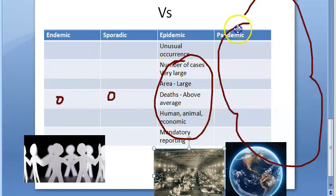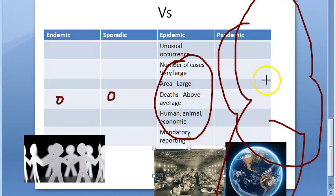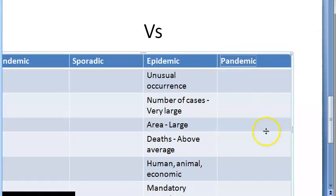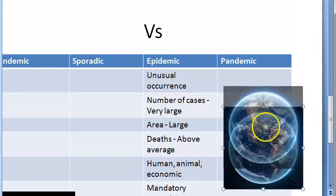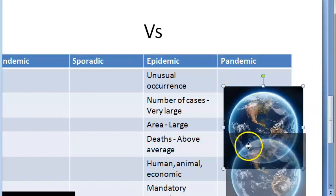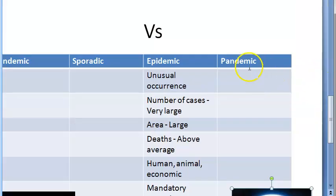Now what about pandemic? Pandemic is where almost the entire world is involved — like in the case of AIDS, which is considered a pandemic, and even diseases like plague have the capacity to become pandemics. Pandemic means an epidemic affecting a large proportion of the population in a wide geographical area — an entire nation, continent, or even the world. Examples include AIDS and plague. There may be a common source of infection.